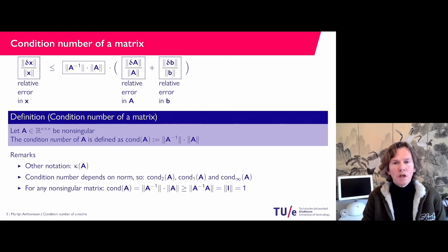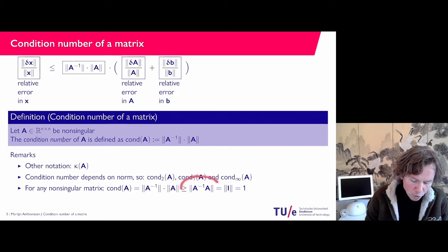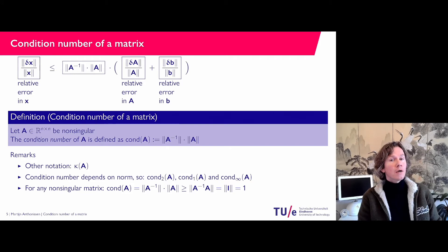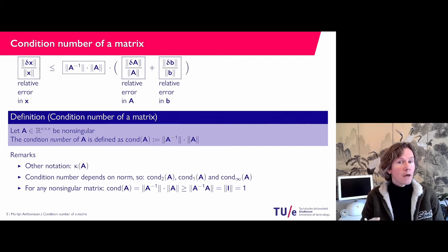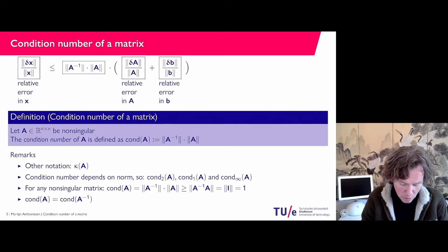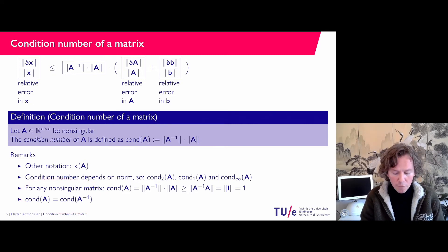For an induced matrix norm, the norm of A inverse times the norm of A is greater than or equal to the norm of A inverse A, which is the identity matrix, and that equals 1. So a condition number is always greater than or equal to 1. One is the perfect condition number in the sense that if you have an error in your matrix, you will have the same relative error in your solution. From the definition you also see it is symmetric in A and A inverse, so the condition number of A equals the condition number of A inverse.